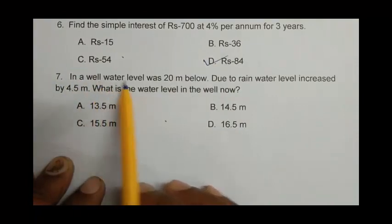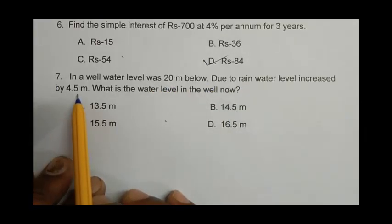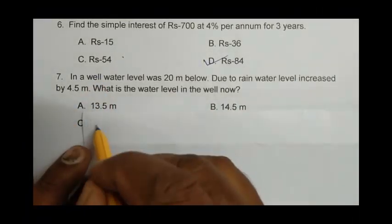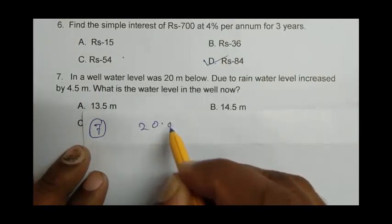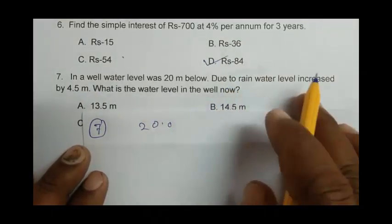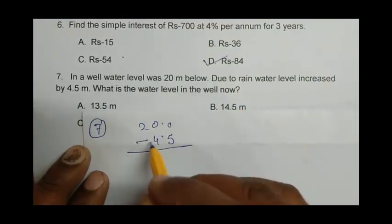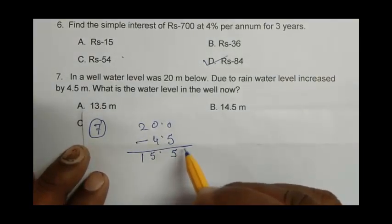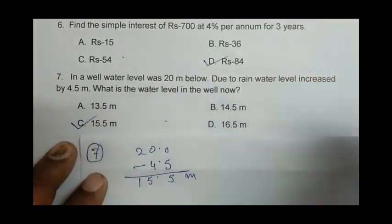Question number 7: In a well, water level was 20 meters below. Due to rain, water level increased by 4.5 meters. What is the water level in the well now? Earlier water level was 20 meters below. Due to rain, it increased by 4.5 meters. So we subtract: 20 - 4.5 = 15.5 meters. So C is the right answer.